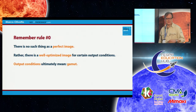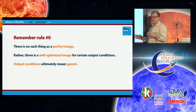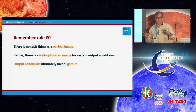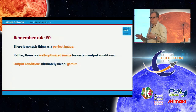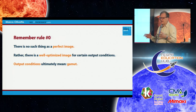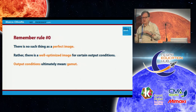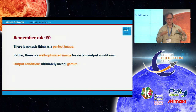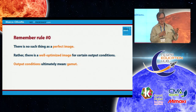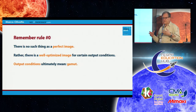A basic rule to remember: a perfect image doesn't exist, period. There is a well-optimized image for certain output conditions, which is very different. In principle, any image should be prepared differently for photographic printing, for offset printing, and differently again for newspaper. If you take a CMYK file that would produce a very good output for a table book and print it on a newspaper, what you get is mud — terribly low contrast, dark, and not appealing.